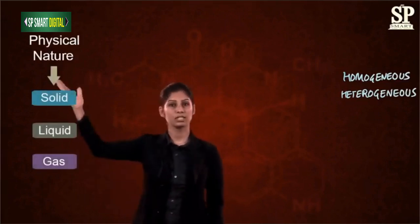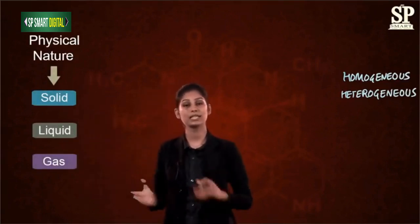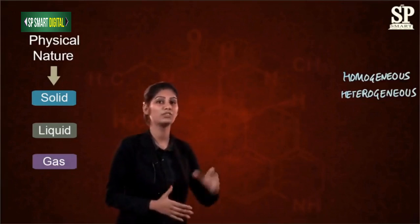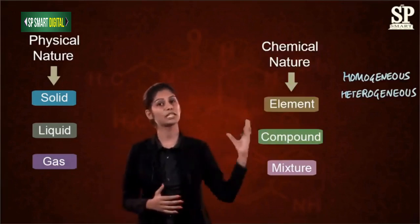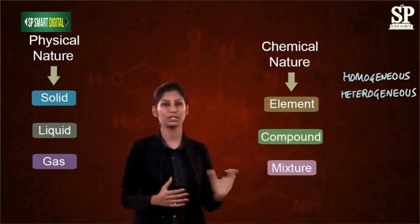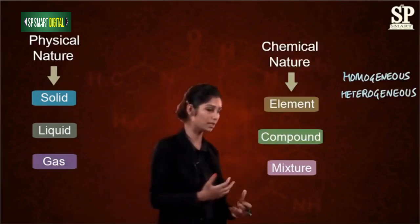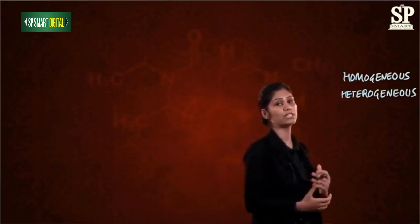Depending upon the physical nature and the chemical nature, matter is classified into two categories. Depending upon the physical nature, we have solid, liquid, and gas. Depending upon the chemical nature, we have elements, compounds, and mixtures. Now let's study the properties of the physical states of matter.